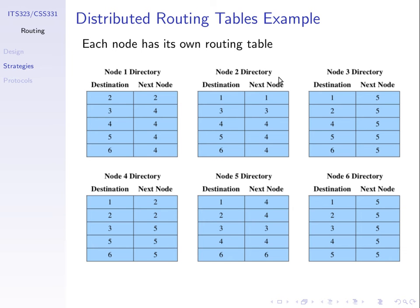We've done it for all source nodes N2 through N6. For example, if we're at node 4 and want to get to node 5, the routing table tells us the next node is actually node 5 - we can send direct. If we're at node 5 and want to get to node 1, the next node in the path is node 4. In fixed routing, this is a distributed approach where the information is stored at each node. Node 1 stores its table, node 2 stores the second table, and so on.